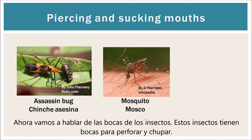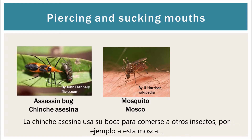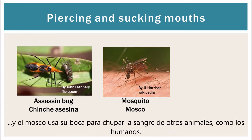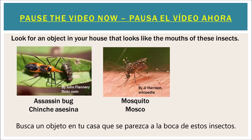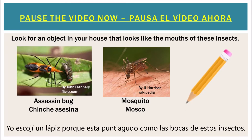Now we're going to talk about insect mouths. These insects have piercing and sucking mouths. The assassin bug uses its mouth to eat other insects, for example this fly, and the mosquito uses its mouth to suck blood out of other animals like humans. Now pause the video and look for an object in your house that looks like the mouth of these insects. I chose a pencil because it is sharp like the mouths of these insects.